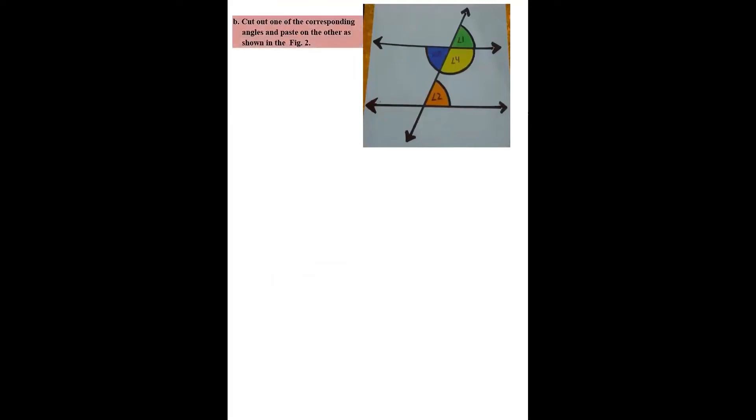We will cut out one of the corresponding angles and paste on the other as shown in this figure. You can see the figure. The green color angle is angle 1 and the orange one is angle 2. You will cut out both the angles and then you will paste half of the part of angle 2 over it. If you will observe it now, it would completely overlap. That means they are equal.